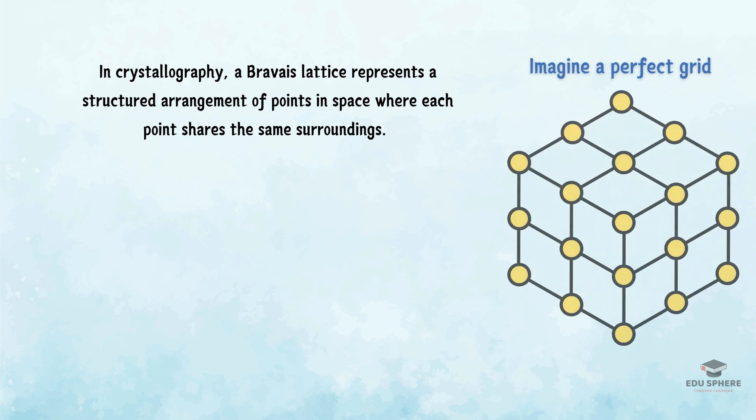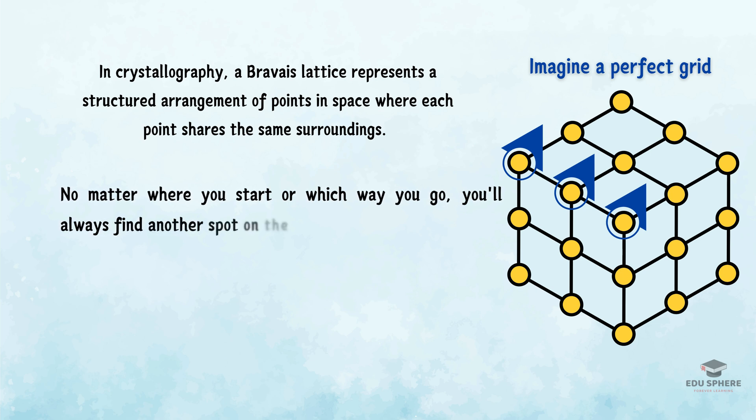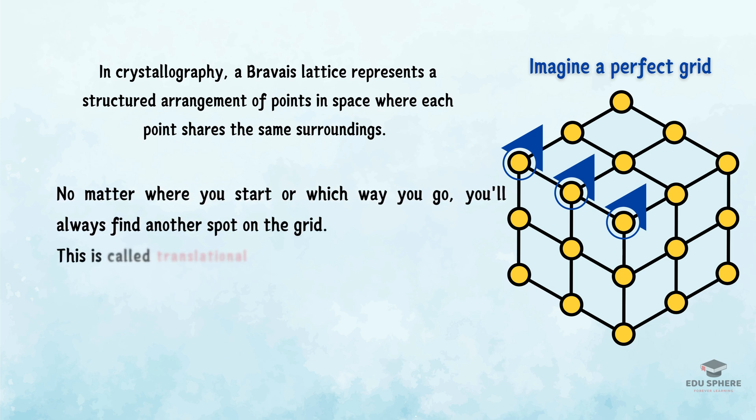Imagine a perfectly aligned grid. No matter which point you start from, and in which direction you move a specific distance, you'll always land on another grid point. This property is known as translational symmetry.